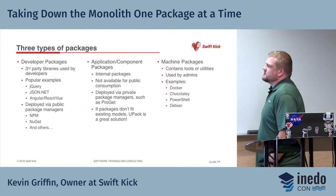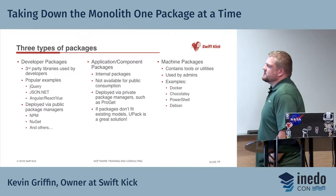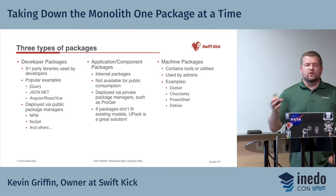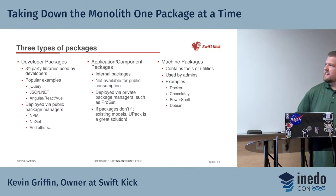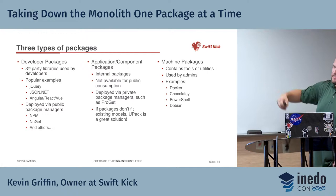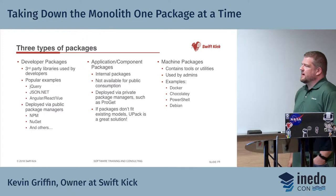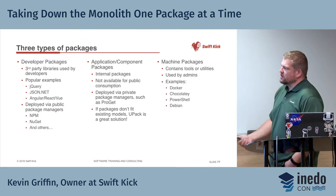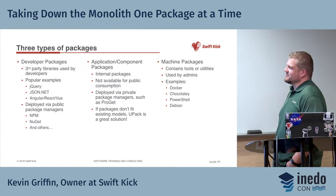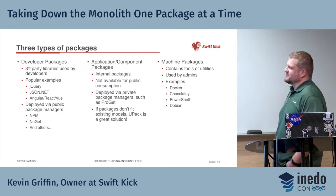Third, you have machine packages — mostly tools or utilities. Anyone use Chocolatey? Chocolatey is basically a machine package built on top of NuGet. You want to install 7-Zip? Install the Chocolatey package for 7-Zip — it downloads the proper executable, does the install, everything's great. Mostly used by system administrators to set up machines. I have a list of Chocolatey scripts I use any time I bootstrap a new machine — Visual Studio, 7-Zip, all my utilities. If you go to Chocolatey's page, people put up their scripts for starting a new development box.